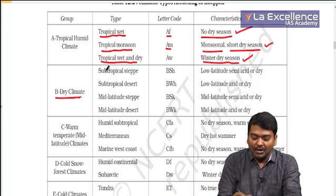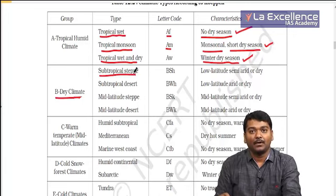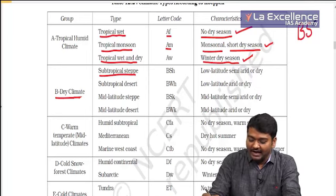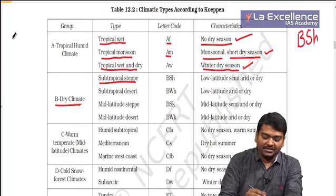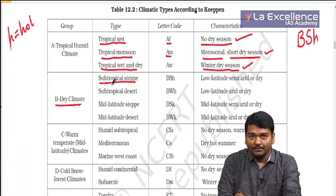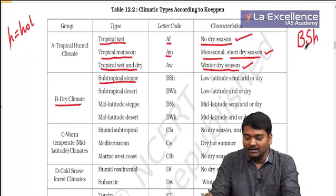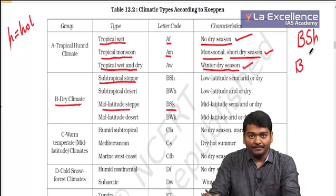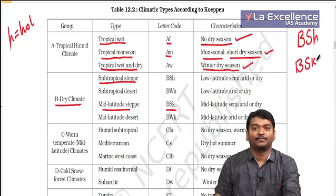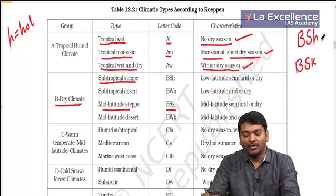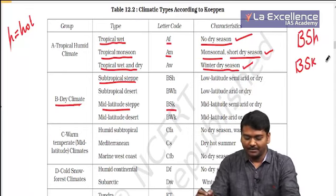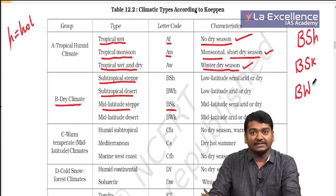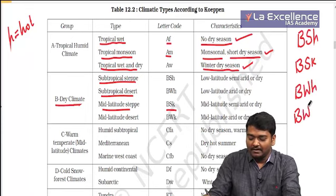Dry climates: BSH is subtropical hot steppes or subtropical tropical grasslands — B is dry, S is grasslands, H is hot. Subtropical hot grasslands. Mid-latitude steppe is dry grasslands, cold. Then BWH is dry desert, hot and tropical. BWK is dry desert, cold.